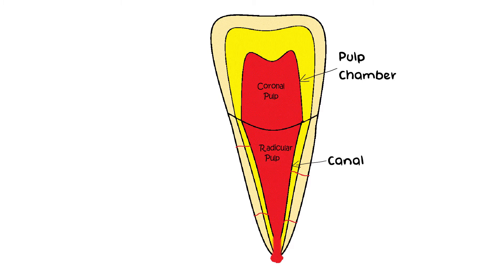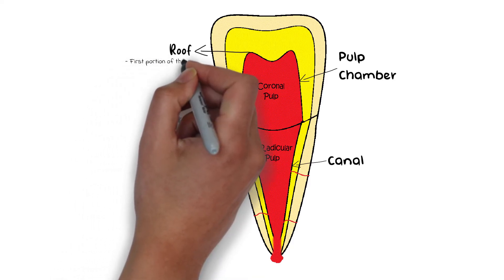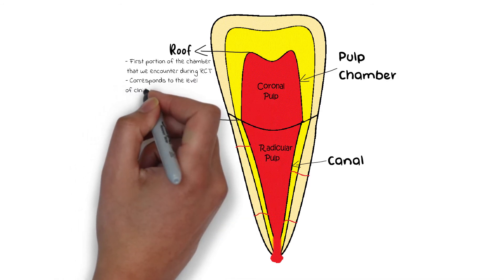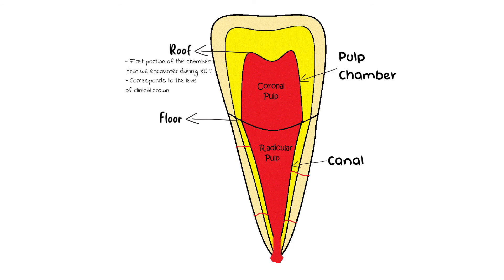The chamber of the tooth can be thought of as a room filled with pulp, named the coronal pulp. Since a room always has a roof and a floor, the chamber also has a roof and a floor. The roof is the part we normally encounter while opening the chamber during a root canal treatment. The level of the roof usually corresponds to the level of the clinical crown — the portion above the gingival level. So by looking at the gingival level, we can make a rough estimate of how much vertical drilling is necessary to reach the roof of the chamber during root canal treatment.